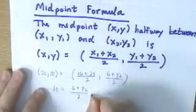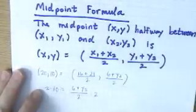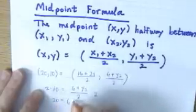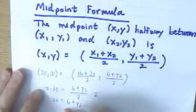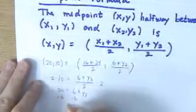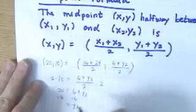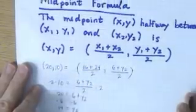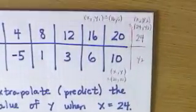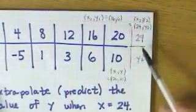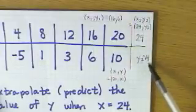Well just multiply both sides of this equation by 2 in order to clear that fraction. And so we get 20 is equal to 6 plus y2. And then just subtract 6 from both sides of the equation to isolate y2 on the right-hand side. And so we get y2 there is going to be 14. So our predicted value is 14. So when x is 24, we could estimate that y there was going to be 14. Thank you.